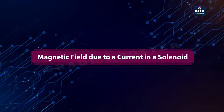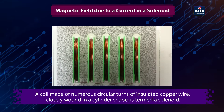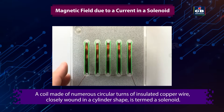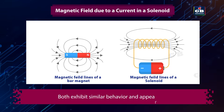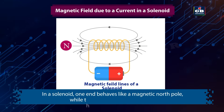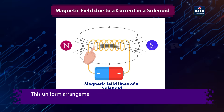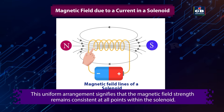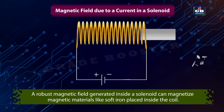Magnetic field due to a current in a solenoid. A coil made of numerous circular turns of insulated copper wire closely wound in a cylinder shape is termed a solenoid. The magnetic field lines around the current-carrying solenoid are similar to the magnetic field lines of a bar magnet — both exhibit similar behavior and appearance. In a solenoid, one end behaves like a magnetic north pole while the other acts as a south pole. Inside the solenoid, the magnetic field lines run parallel and straight, signifying that the magnetic field strength remains consistent at all points within the solenoid.